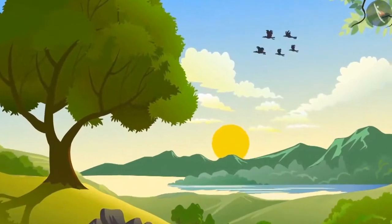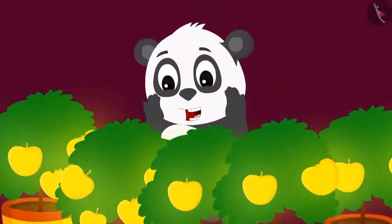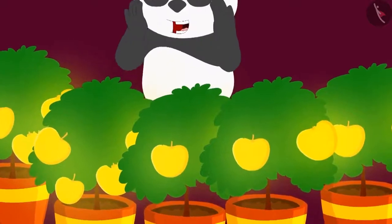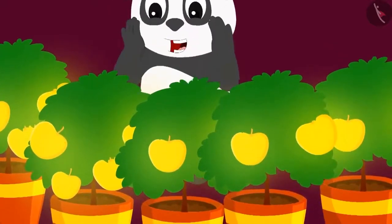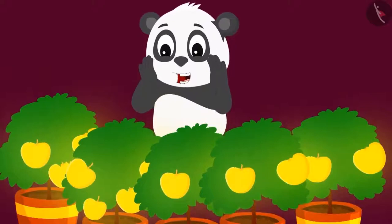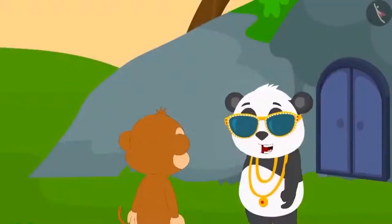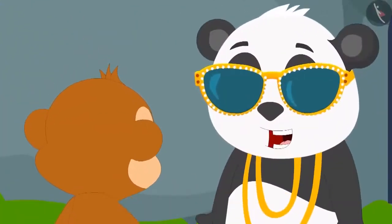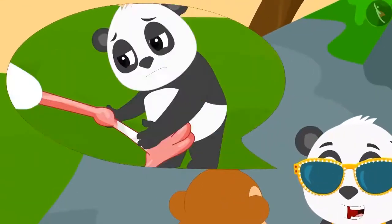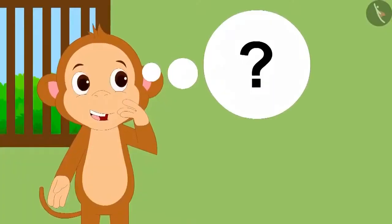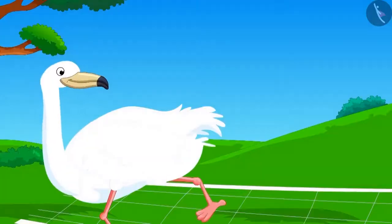The next day, Golu saw that big trees had grown from those seeds. When Golu saw the trees after a few days, he was unable to believe his eyes — golden apples were growing on those trees. Golu was very happy. Babban wanted to know the secret behind Golu becoming so rich suddenly. Golu narrated the entire story. The next day, Babban injured the bird by laying a trap.